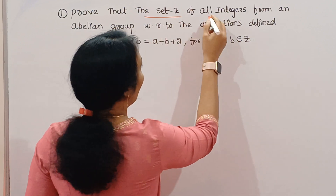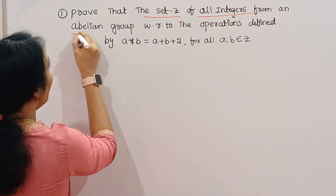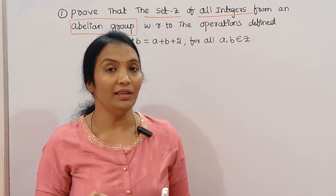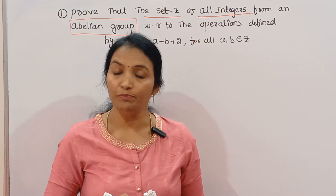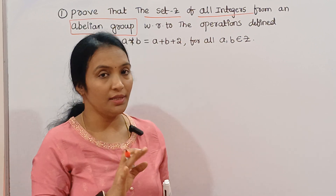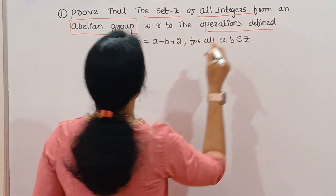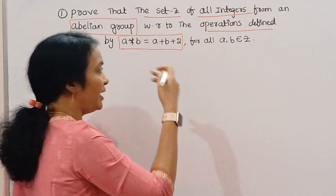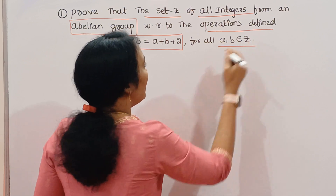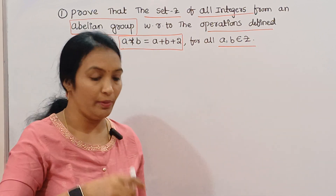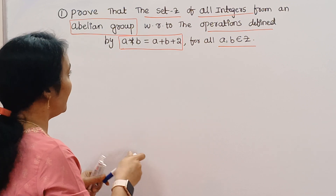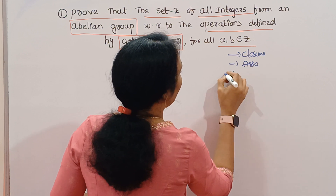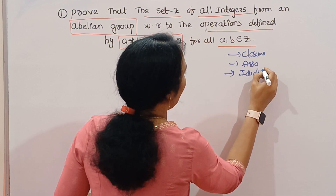The set Z is the set of all integers. This is an abelian group. With respect to the operation — which operation star? A star B is a binary operation for all A, B belonging to Z. The first group means that it satisfies closure, associative, identity, and inverse.